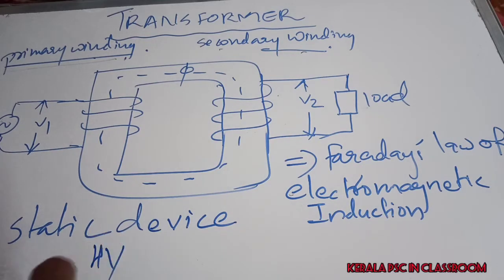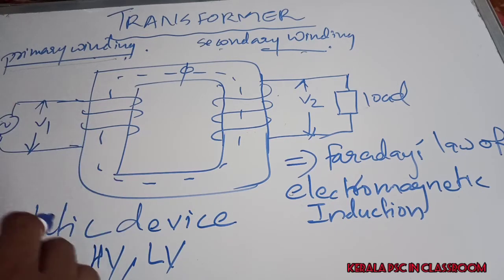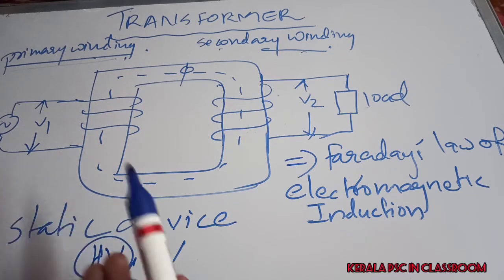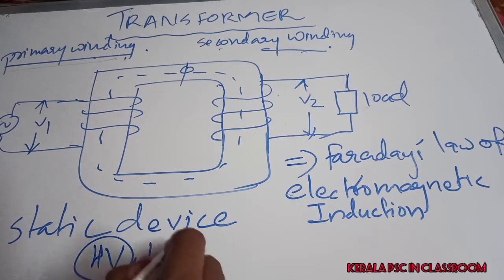What is a high voltage winding? The winding which is connected to the high voltage side is called the high voltage winding. The winding which is connected to the low voltage side is called the low voltage winding.